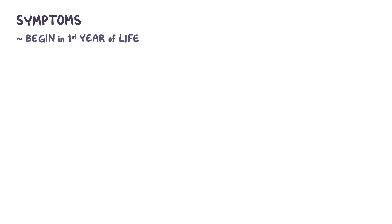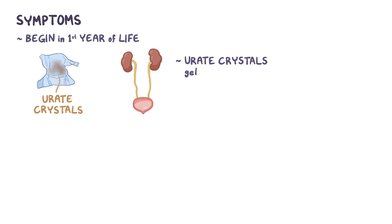Symptoms of Lesch-Nyhan syndrome typically present during the first year of life. Sometimes the uric acid forms small orange sand-like urate crystals that can go through the urinary tract and end up in an infant's diaper. Other times, the uric acid forms larger urate crystals that get stuck in the urinary tract and cause intense pain, fussiness, and hematuria, or blood in the urine, as well as recurrent urinary tract infections.